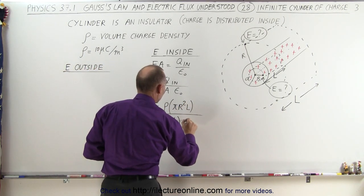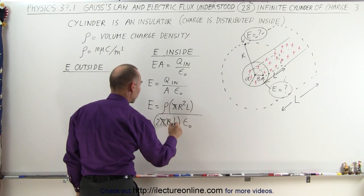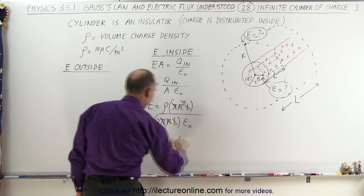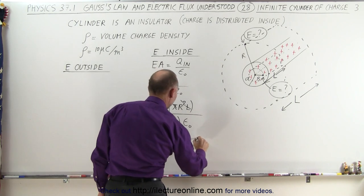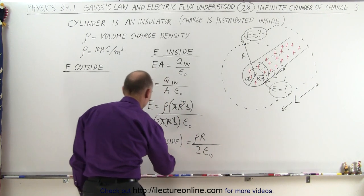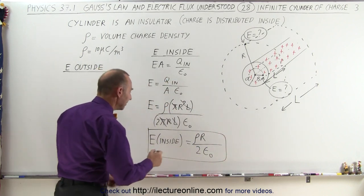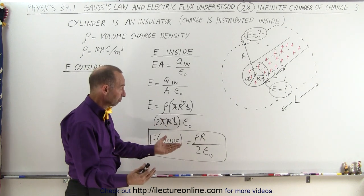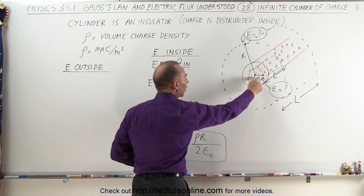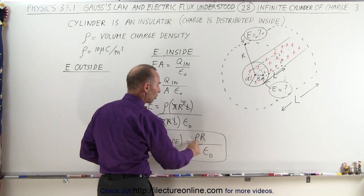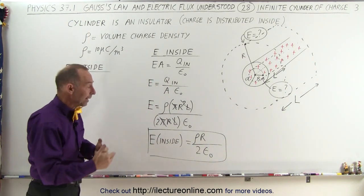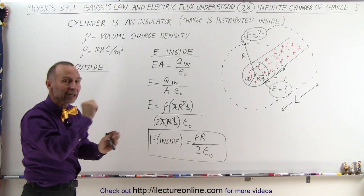Multiplying by epsilon sub-naught: pi cancels, one of the r's cancels, and L cancels, leaving the electric field on the inside equal to the volume charge density times r divided by 2 epsilon sub-naught. Notice when r goes to zero, there is no electric field at the very center. When r equals A (the radius of the cylinder), this becomes the volume charge density times A divided by 2 epsilon sub-naught — so it's simply a linear function of the distance from the center to the edge of the cylinder.